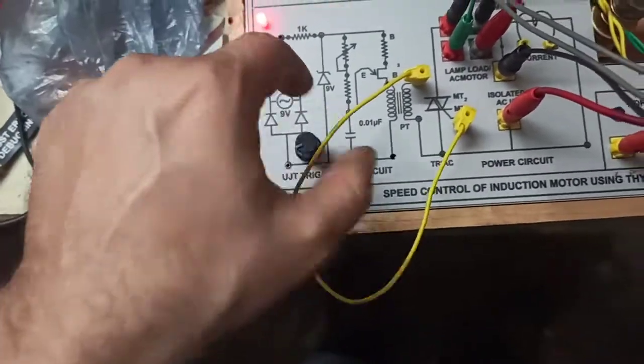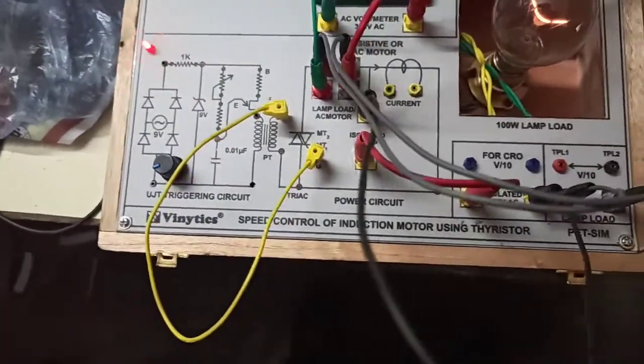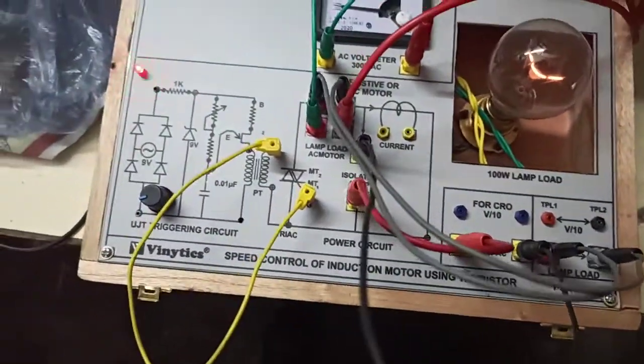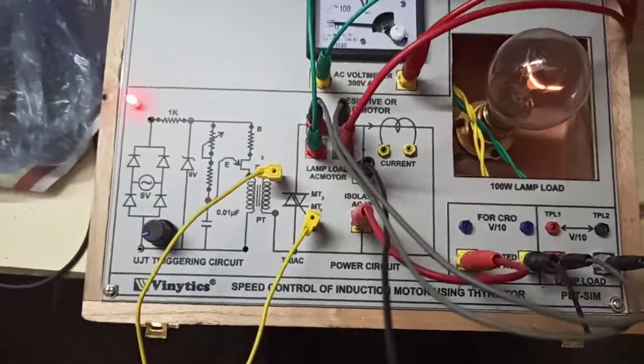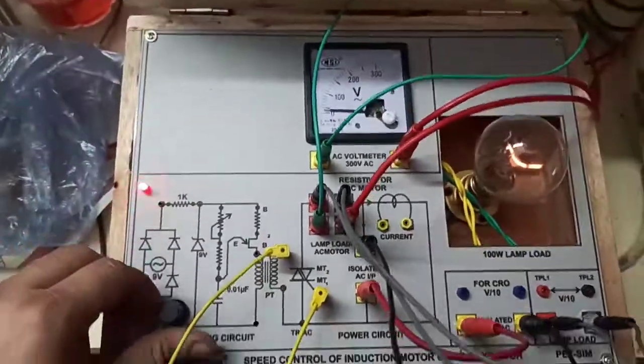In this we are using the UJT as a triggering circuit which is in turn triggering our triac, and we are using this isolated AC to 220 volt AC. For right now we have connected our AC voltmeter to it.